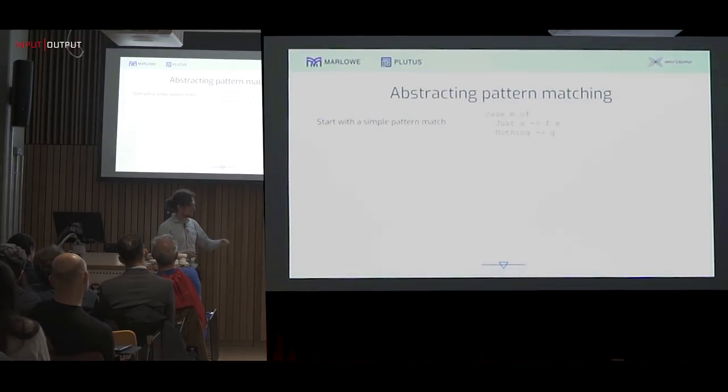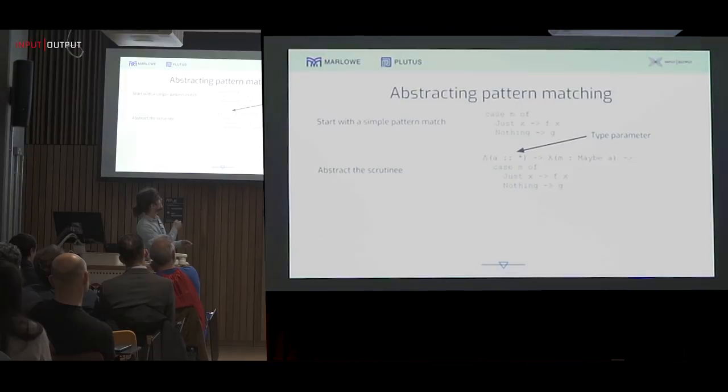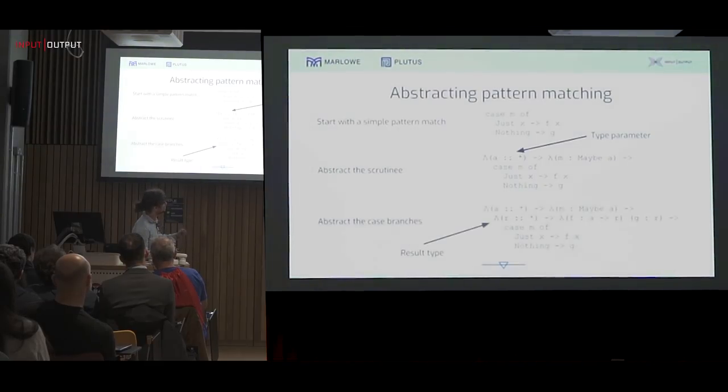If you think about it for a bit, any pattern match on a maybe value is going to have to look something like this for some suitable choice of f and g. And then we can just start abstracting. We can pull out the scrutinee, which is compiler jargon for that thing that you're pattern matching on. We take some arguments of type maybe a. And then we need to also be polymorphic over this a. So we're going to use system f's big lambda that lets us bind type variables like that.